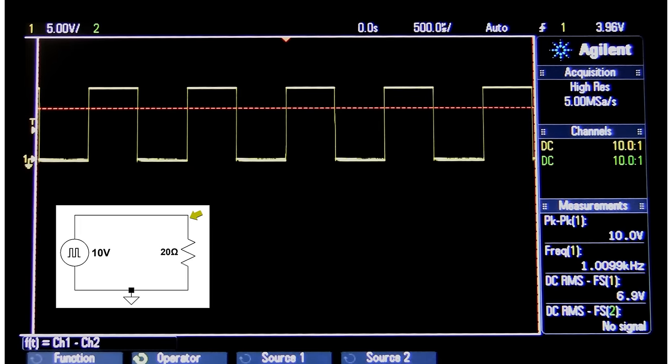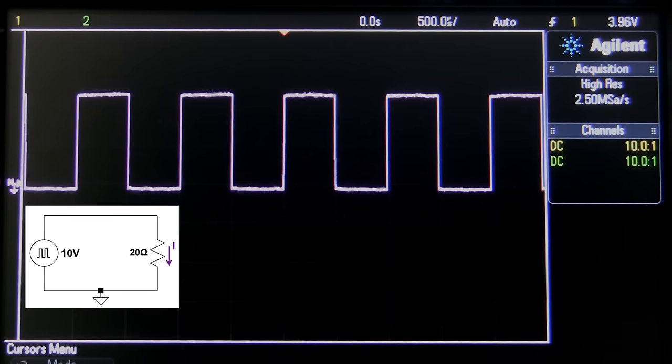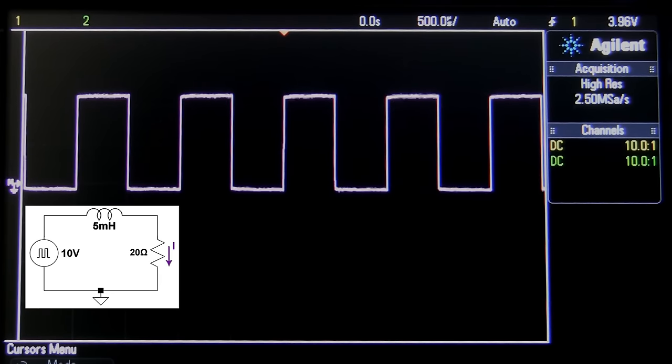Okay, so here's the 1 kilohertz input square wave. And here's the current waveform, also perfectly square. Now watch what happens when I add a 5 millihenry inductor in series with the circuit.